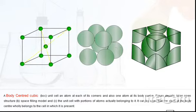A body-centered cubic unit cell has an atom at each of its corners, and also one atom at its body center. Figure depicts an open structure, space-filling model, and the unit cell with portions of atoms actually belonging to it. It can be seen that the atom at the body center wholly belongs to the cell in which it is present.